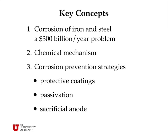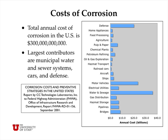We're going to talk about the chemical mechanism of corrosion, and we're going to talk about three main strategies for preventing or reducing corrosion of iron and steel. The annual cost of corrosion is 3 times 10 to the 11th dollars per year in the United States alone — an incredible amount of money. This estimate was made by a study commissioned by the Federal Highway Administration in 2000 and 2001.